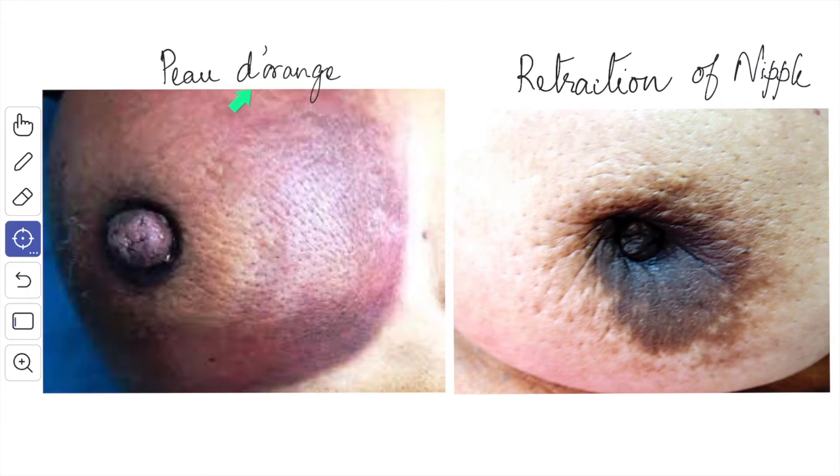Next is peau d'orange. It is a condition where the hair follicles over the lump appear to be retracted and is caused by obstruction of the cutaneous lymphatics with stagnation of lymph and edema of the skin around the hair follicle. This resembles the skin of an orange, hence the name. In unilateral cancer breast, the axillary nodes of both sides should be examined for enlargement.